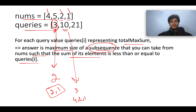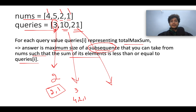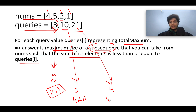The next query value is 21, which is the maximum allowed sum. All the elements can be taken: 4 plus 5 is 9, plus 2 is 11, plus 1 is 12. So the answer corresponds to 4, and the elements are 4, 5, 2, and 1.